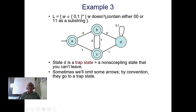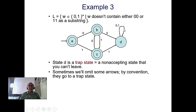This example is tricky. The language is: w does not contain either '00' or '11' as a substring. State D is a trap state. If a string contains '00' or '1 1', the machine goes to D and loops there on both 0 and 1 — it can never reach states B or C from D. A trap state is a non-accepting state from which you cannot escape.